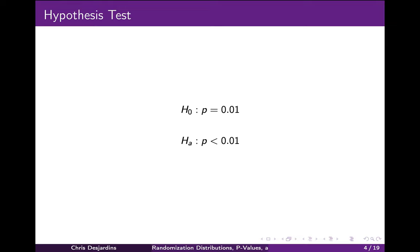We begin by writing the null and the alternative hypotheses. We are dealing with a single categorical variable: did the patient who had a colon polyp removed during a colonoscopy die of colon cancer, yes or no? Because we have a single categorical variable, we know that the parameter is p, the proportion of all patients who had a colon polyp removed during a colonoscopy that died of colon cancer. We write the null hypothesis as p = 0.01 and the alternative hypothesis as p < 0.01. The null hypothesis states the proportion is 0.01, and the alternative hypothesis states it is less than 0.01.